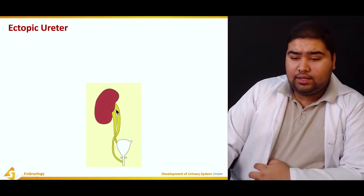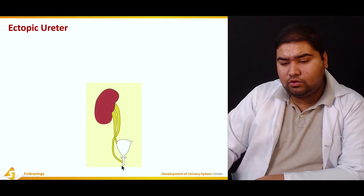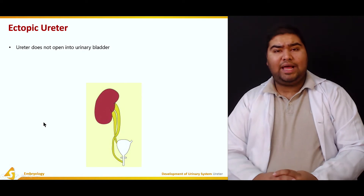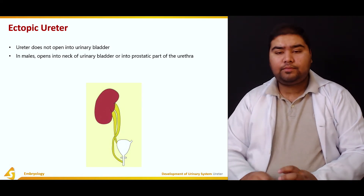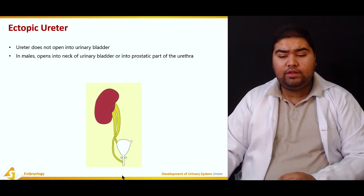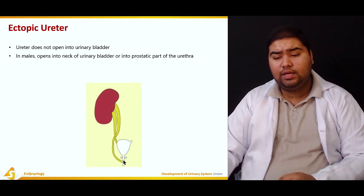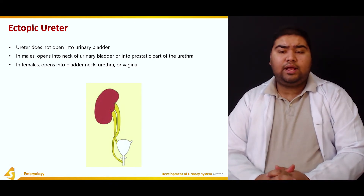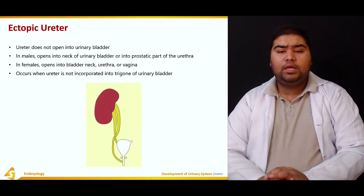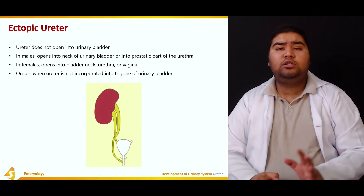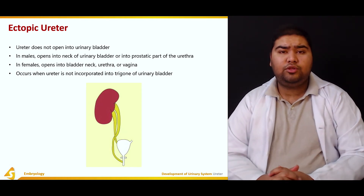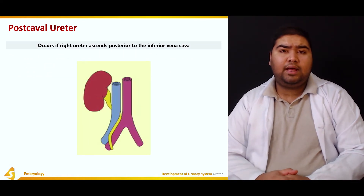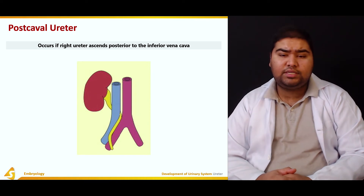An ectopic ureter: as seen in the figure, the ureter opens ectopically, not in its right position. The ureter does not open into the bladder. In males, it opens into the neck of the bladder or the prostatic part of the urethra. In females, it may open into the bladder neck, the urethra, or the vagina. This occurs when the ureter is not completely absorbed within the trigone of the urinary bladder.